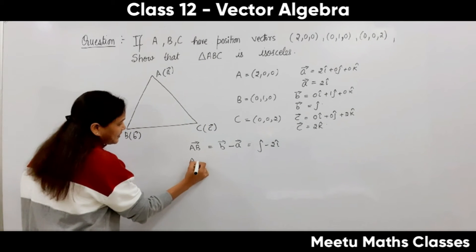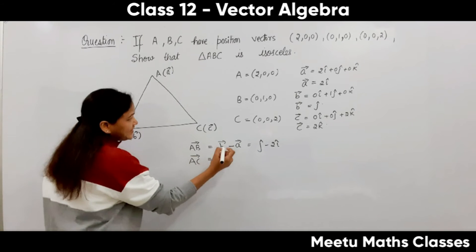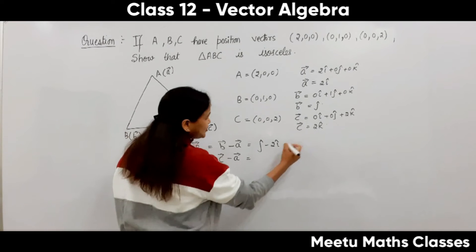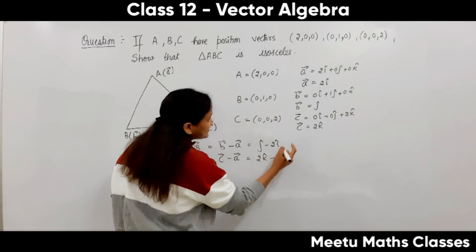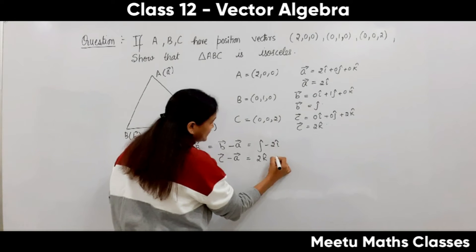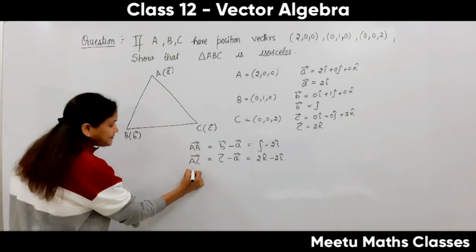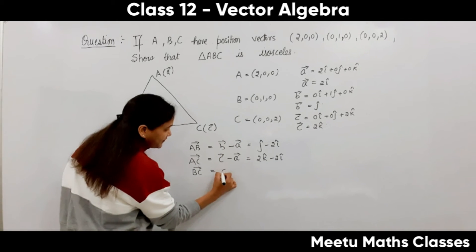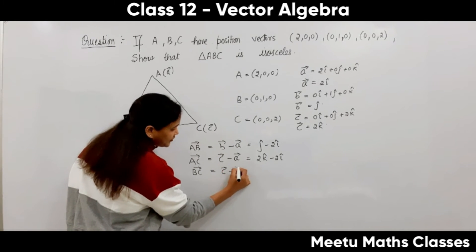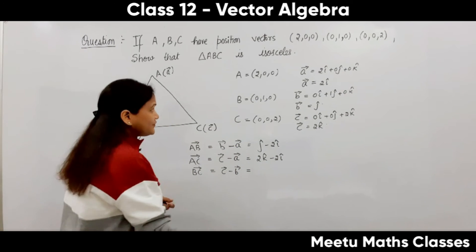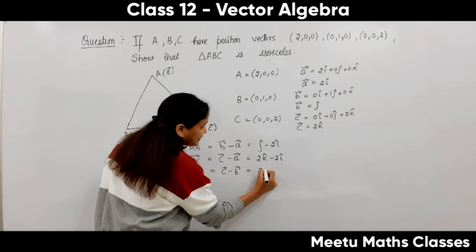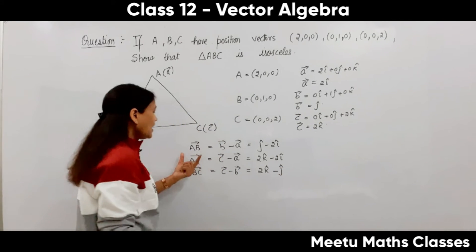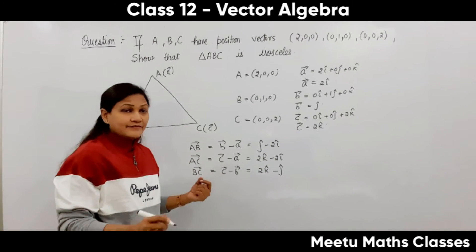Vector AC is the position vector of C minus the position vector of A, which is 2k minus 2i. And vector BC is the position vector of C minus the position vector of B, which is 2k minus j.